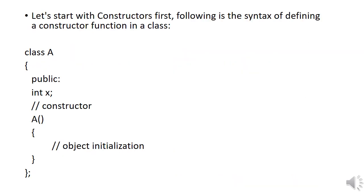The syntax for defining a constructor in a class: define class A, and inside the public access specifier declare a variable x and define a function 'a()' which is the constructor function. The function name 'a' matches the class name 'A', confirming it is a constructor. Inside the constructor you can do object initialization.